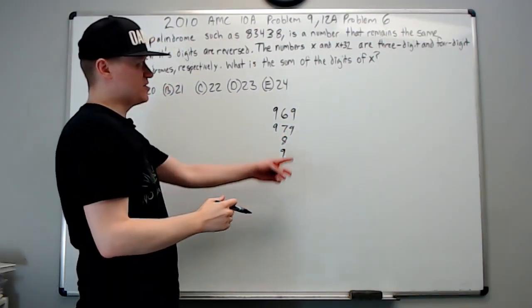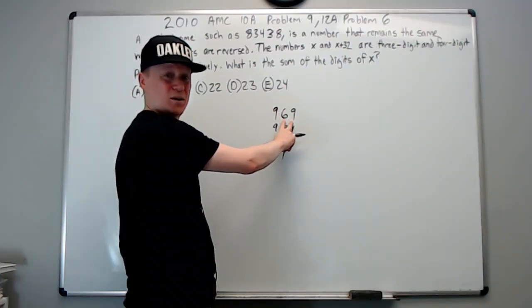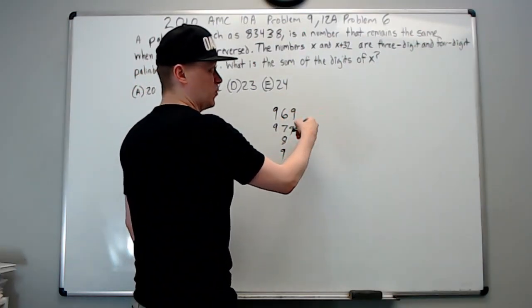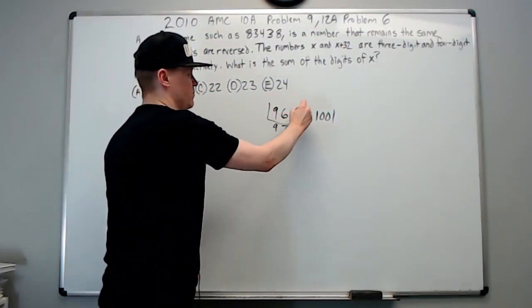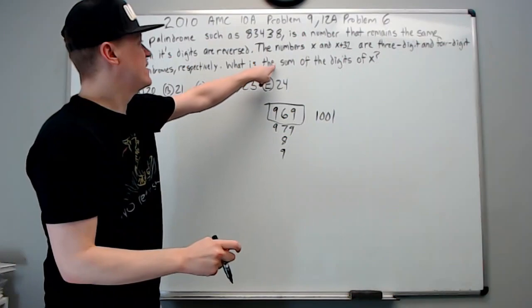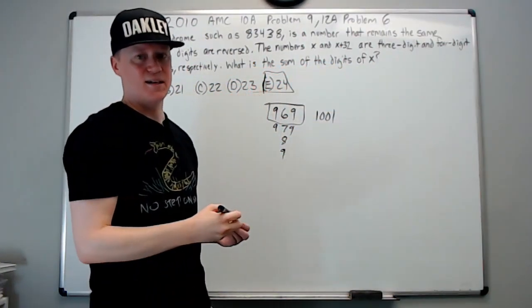What is the sum of the digits of x? 9 plus 6 plus 9 is 18 plus 6 is 24. On to the next one.